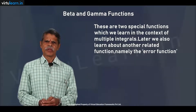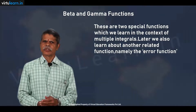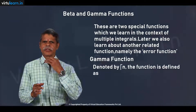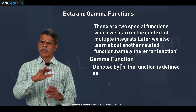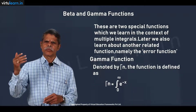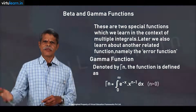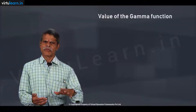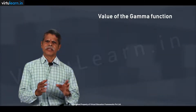Let us now learn the definition of the Gamma function. The Gamma function is a function of a single argument defined as an improper integral: Gamma(n) is equal to the integral from zero to infinity of e^(−x) · x^(n−1) dx, defined for n greater than zero.